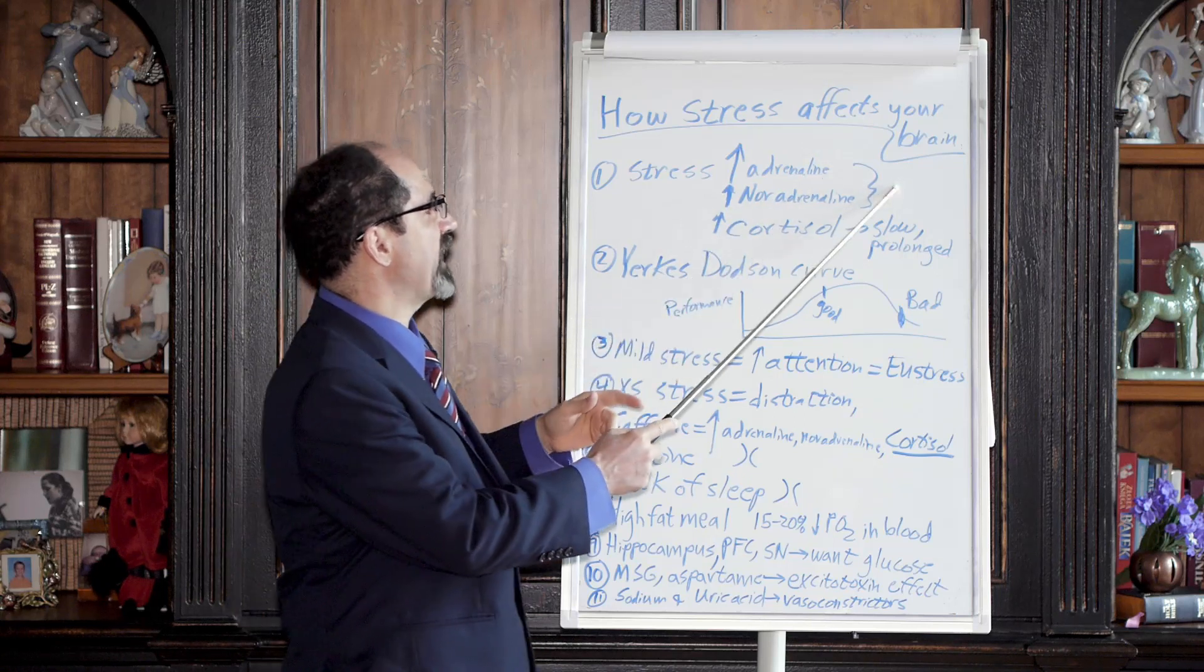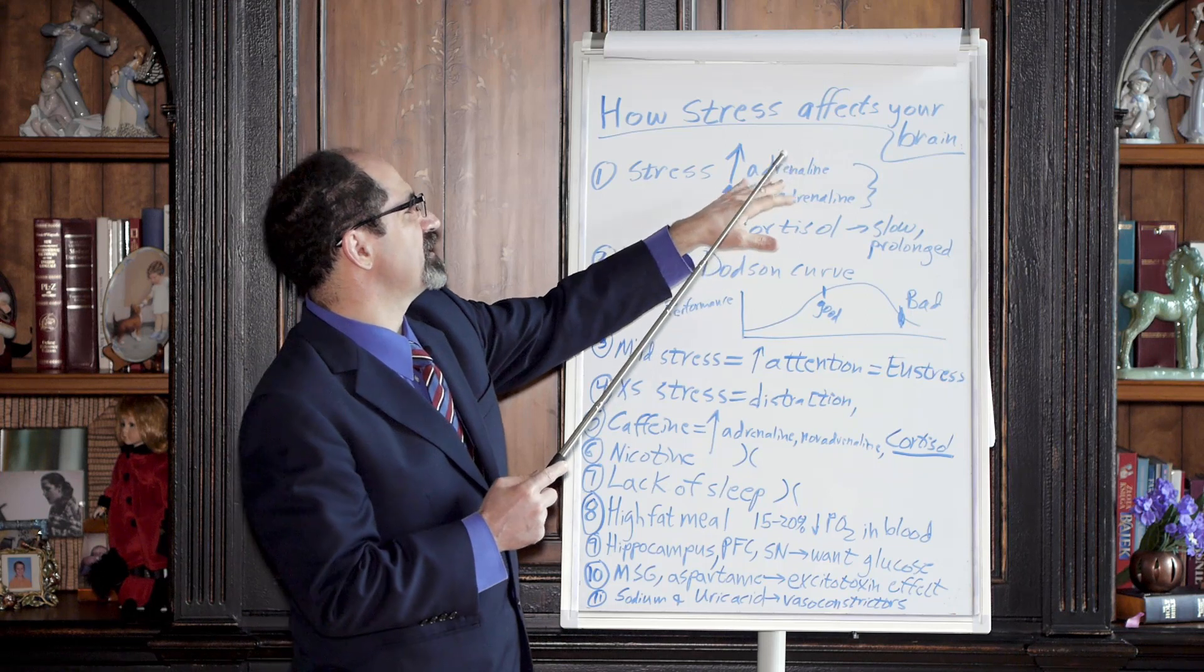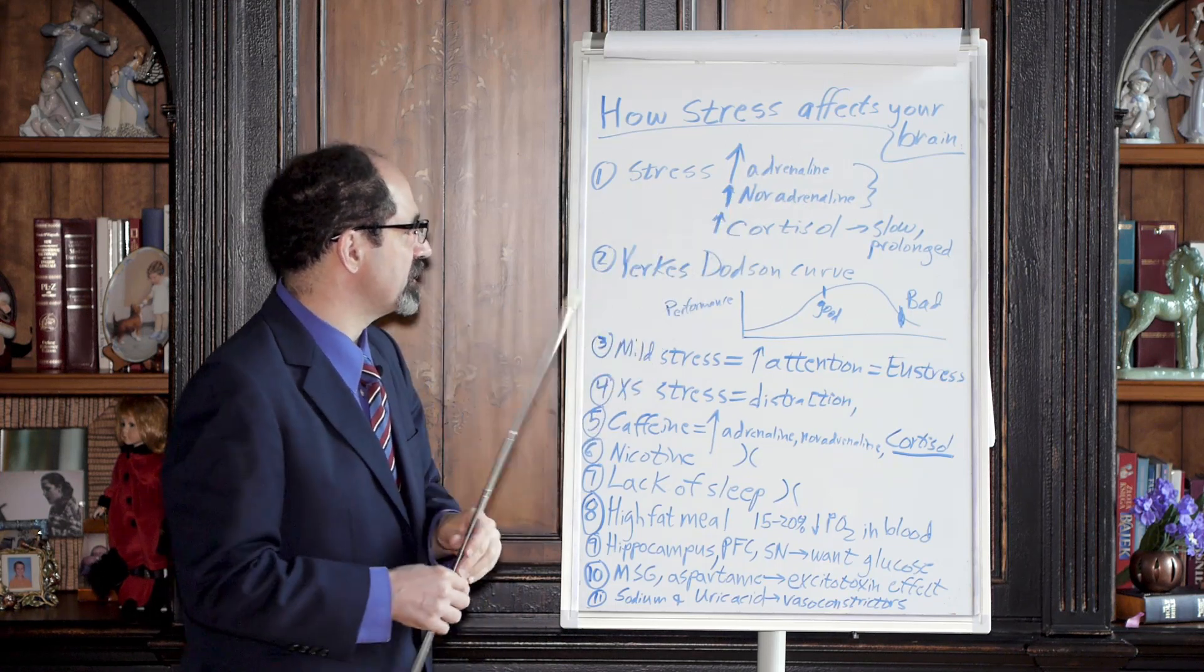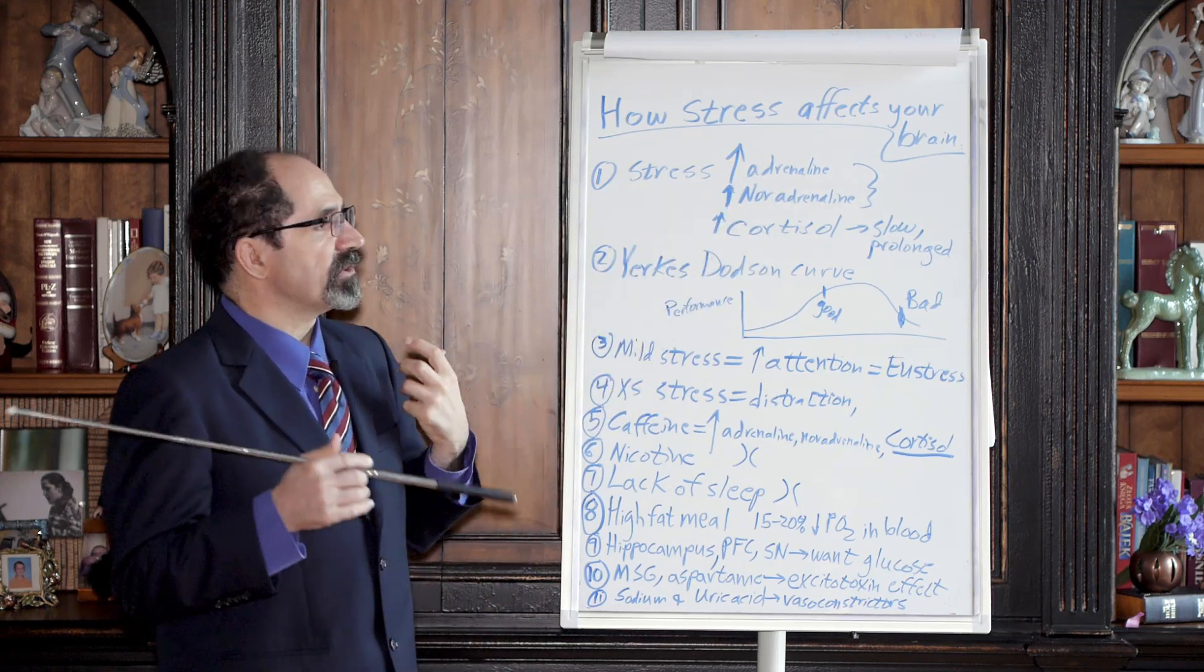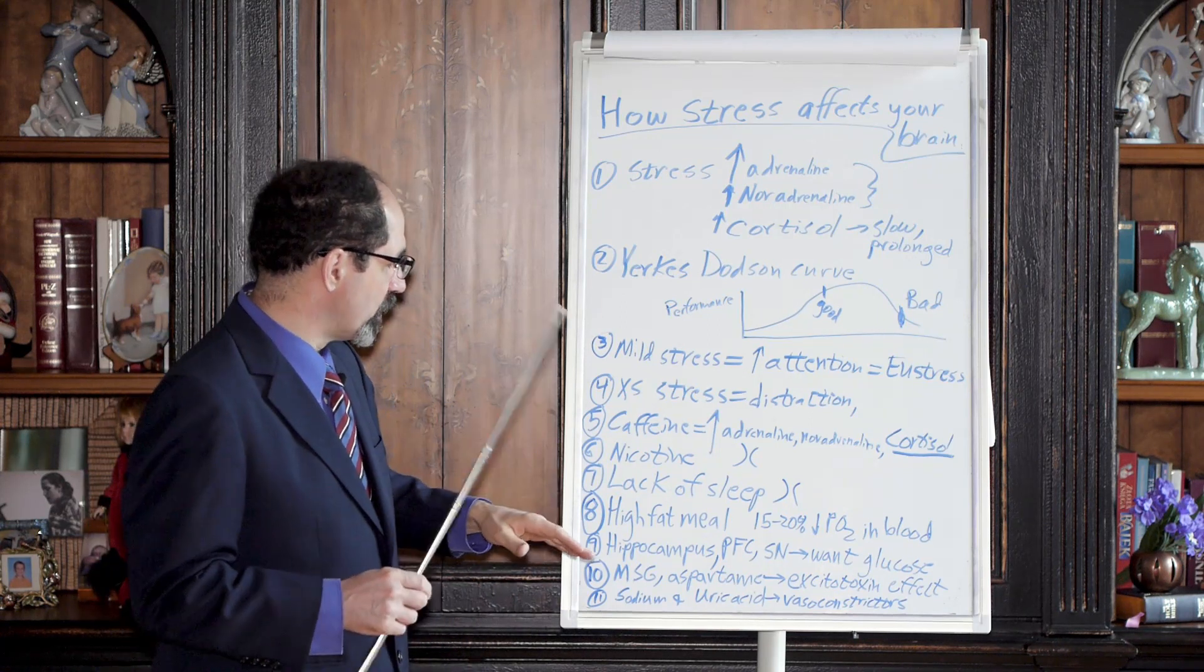Because when you increase these hormones, these are the catecholamines. That's the fast onset for stress. Epinephrine, norepinephrine. Adrenaline is the same thing as epinephrine. Those are your catecholamines. They increase your heart rate and also make it hard for you to sleep, so you'll tend to make the problem worse.